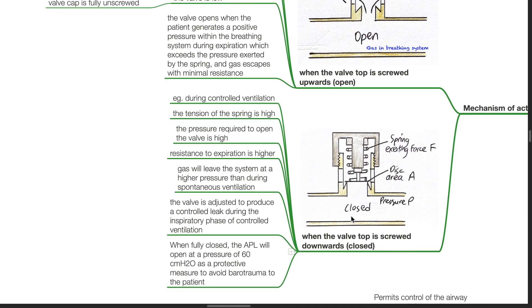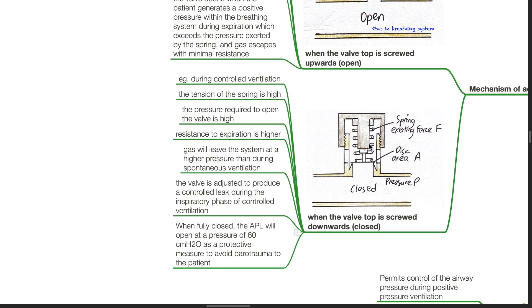When the valve top is screwed downwards, for example during controlled ventilation, the tension of the spring is high. The pressure required to open the valve is high. Resistance to expiration is greater. Gas will leave the system at a higher pressure than during spontaneous ventilation. The valve is adjusted to produce a controlled leak during the inspiratory phase of controlled ventilation. When fully closed, the APL valve will open at a pressure of 60 CMH2O as a protective measure to avoid barotrauma to the patient.